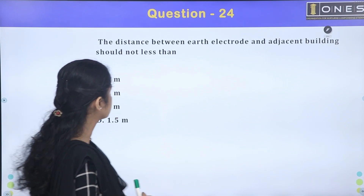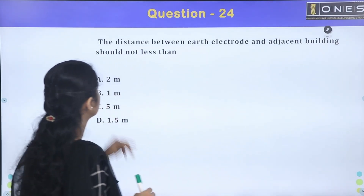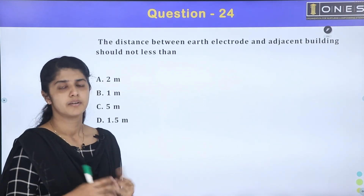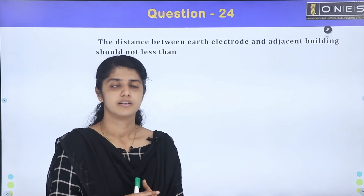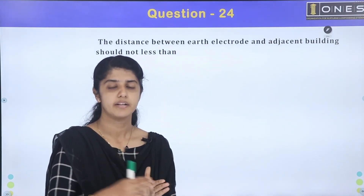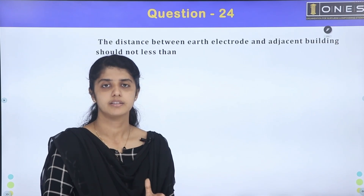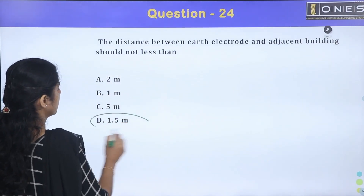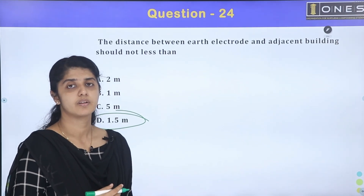The distance between an earth electrode and an adjacent building should not be less than 1.5 meters. The electrode is inserted into the ground at this minimum distance from the structure.